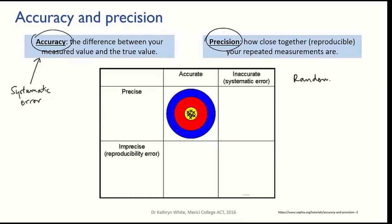Random error affects precision, and it may also affect accuracy. Precision is how close together or reproducible your results are if you measure the same thing several times.